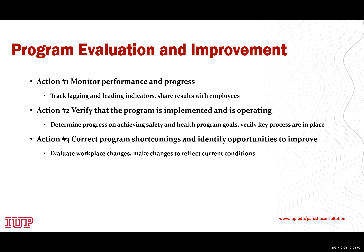Verify that the program is implemented and operating by tracking progress on safety and health goals and verifying that key processes are in place — such as a mechanism to report injuries, illnesses, and incidents, and that workplace inspections are being conducted with a tracking mechanism to confirm identified hazards have been corrected. Correct any program shortcomings and identify opportunities to improve. Workplace changes such as new equipment, new materials, or key personnel changes require you to reflect back and make sure current conditions are still properly addressed.